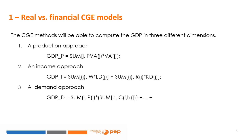In a CGE model, we can compute the GDP in different dimensions. The production approach is based on the value added of sectors like agriculture, mining, textiles, etc. The income approach shows the contribution of labor and capital income to GDP. The third calculates the sum of final demand: household consumption, investments, government spending, and net exports. The three approaches give the same evaluation of GDP. Even if the perspectives are different, the methodology constrains the analyst to look at the different components of the economic system in a coherent way.